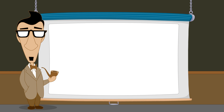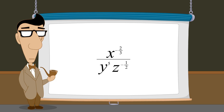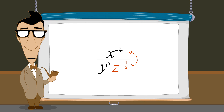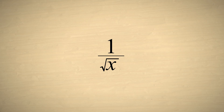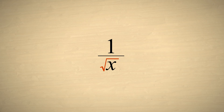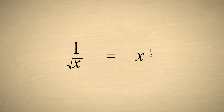Rational exponents follow all the same rules we already know for integer exponents. For example, in an expression written as a fraction, we can move the exponential terms from the denominator to the numerator, or from the numerator to the denominator, as long as we switch the sign of its exponent. As an example, let's say that we want to write the expression one over the square root of x without using a radical sign. We can eliminate the radical sign by writing the square root of x as x to the one-half power. But then we can simplify this expression further by moving the x-term from the denominator to the numerator and switching the sign of the exponent. So one over the square root of x can be written as x to the negative one-half power.